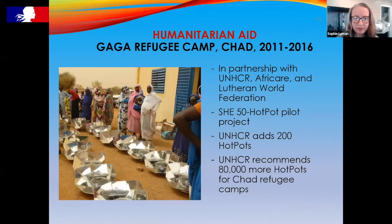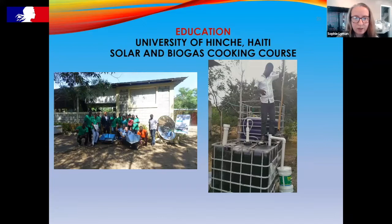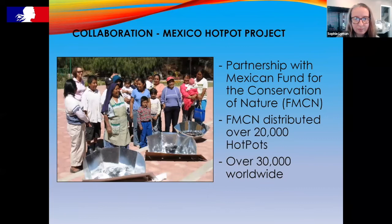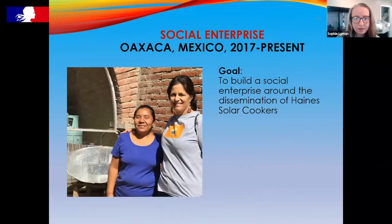We carry out humanitarian aid working with local partners — we usually plant the seed and let local partners continue without us. We started with a 50 Hot Pot project in Gaga refugee camp in Chad, and they added another 200. We also carry out research and development — we helped design the Hot Pot over 20 years ago, and our partner in Mexico FMCN has distributed or sold over 20,000 Hot Pots, with over 30,000 in use worldwide. One of our latest projects focused on trying to kickstart social enterprise, using the Haines solar cooker — a more powerful yet far more affordable version of the Hot Pot.